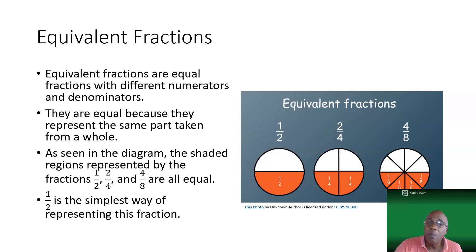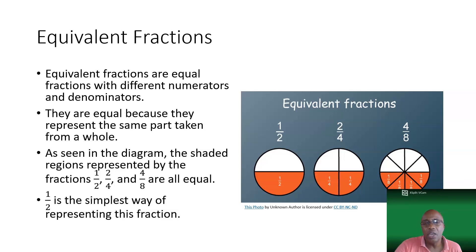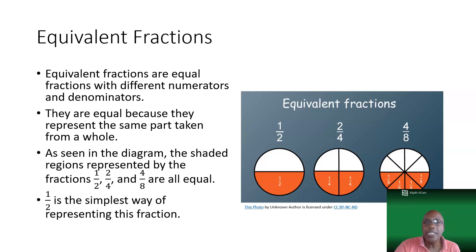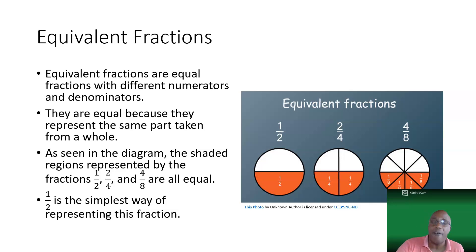If you look at the diagram, we have the same parts of the whole shaded, but in the first diagram you have one part out of two equal parts — that's a half. In the second you have two parts shaded out of four equal parts, and in the third you have four parts shaded out of eight equal parts. But when you look at it, all the circles just have one part out of two shaded. This means a half, two over four, and four over eight are equal fractions, and the simplest way of representing these three fractions is a half — that is writing the fraction in its lowest terms.